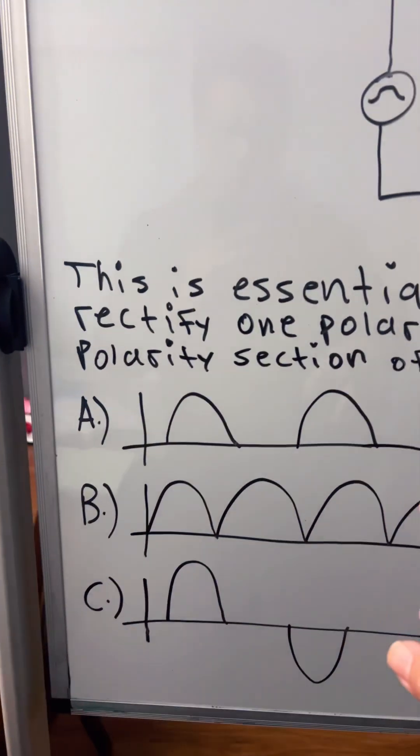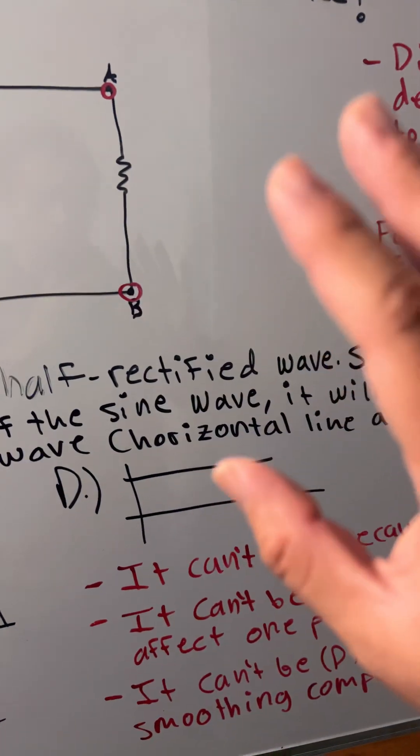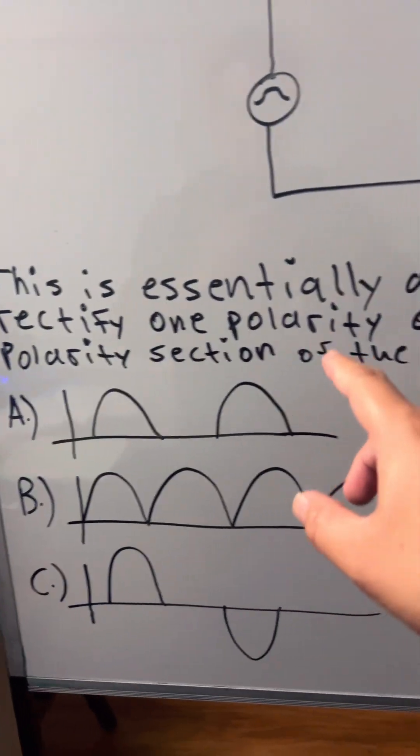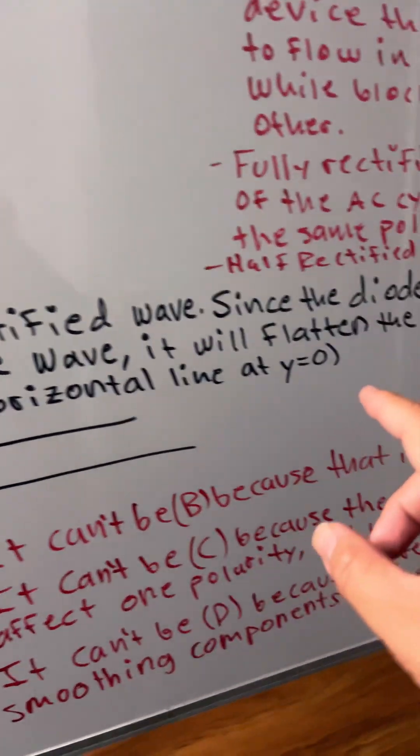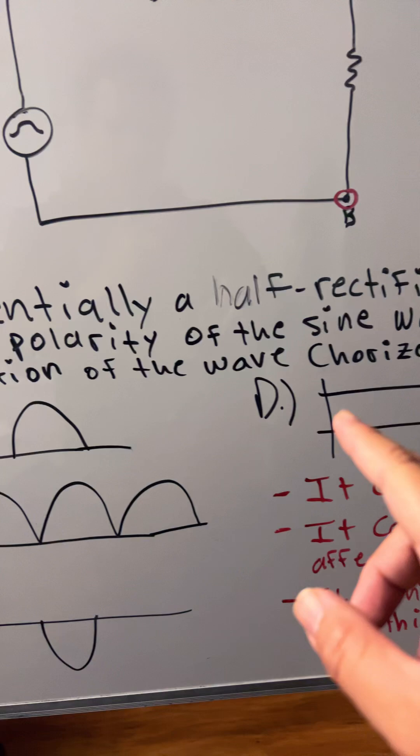So the answer is A. The half rectified wave, since the diode would only rectify one polarity of the sine wave and will flatten the opposite polarity section of the wave.